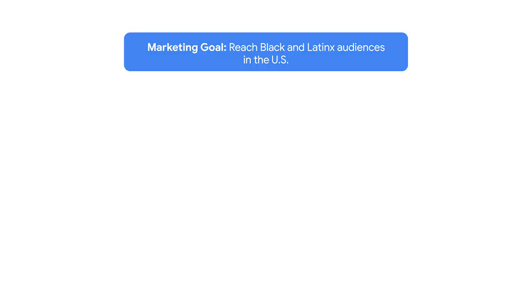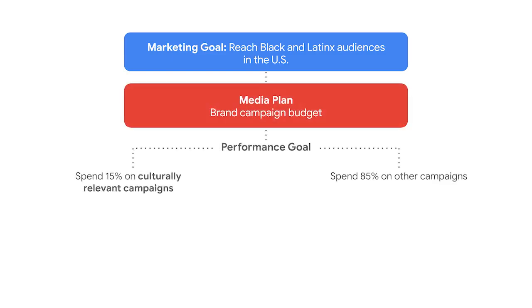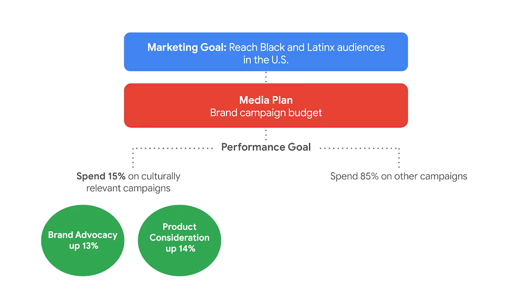Here's a real example of the power of a media plan with a clear marketing objective. Google had a marketing goal to reach Black and Latinx audiences in the United States. Google's media plan called for 15% of Google's brand campaign budget to be spent on culturally relevant media — that was the performance goal. As a result, campaigns were more inclusive. One campaign targeted media events with high viewership among Black audiences and delivered a 13% increase in brand advocacy among Black adults 35 to 49 years old. Another campaign to sponsor the Latin Grammys resulted in a 14% increase in Spanish-speaking adults 18 to 49 years old likely to consider the purchase of a Pixel 5 phone.